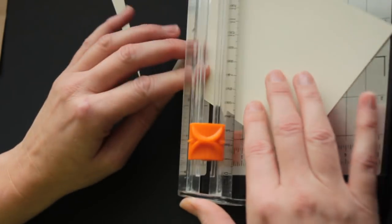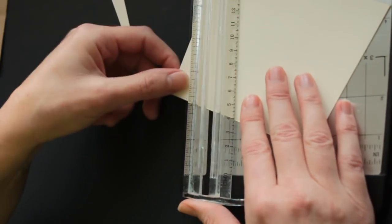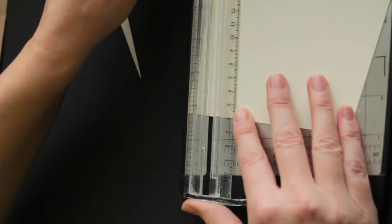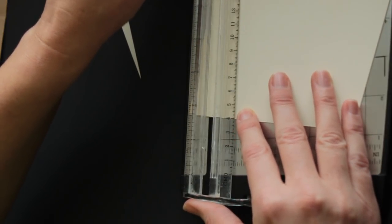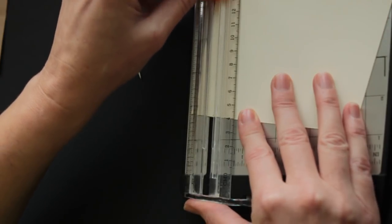Then repeat it on the other side. Line up the edge and the marking with the cutting groove and cut it down. There.